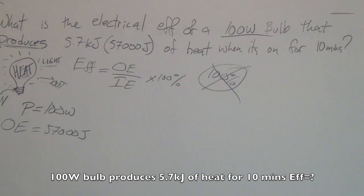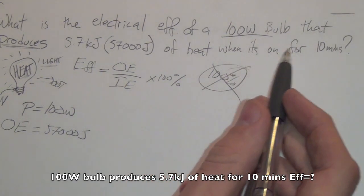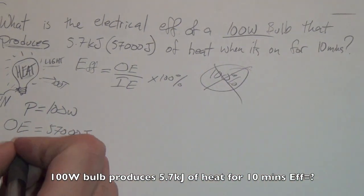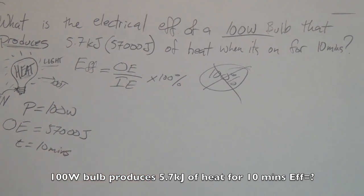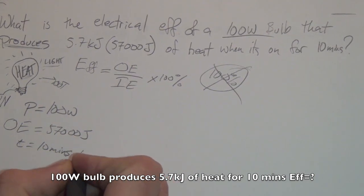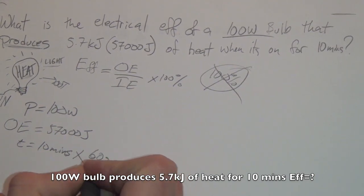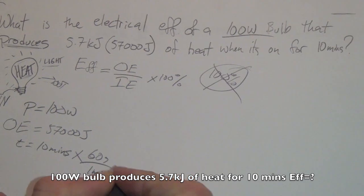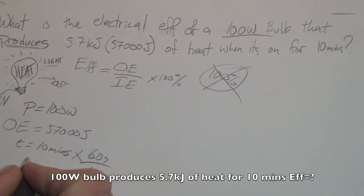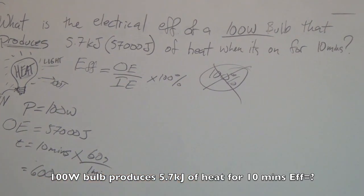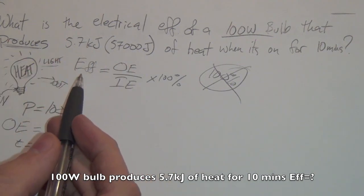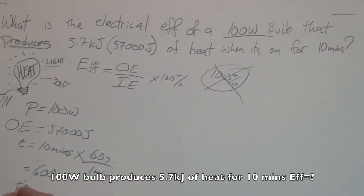We have heat when it is on for 10 minutes. Time equals 10 minutes, which I don't like, so I'm going to multiply it by the ratio of 60 seconds per one minute — we deal in seconds here. So time is actually 600 seconds. We are looking for efficiency.